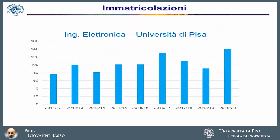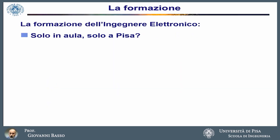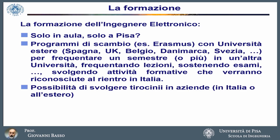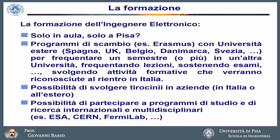For some years, the number of students enrolled in the electronic engineering course has been between 100 and 140 units — a number that allows a good quality of teaching. The training of the electronic engineer does not only happen in school and not only in Pisa. Active exchange programs such as the Erasmus program are available with foreign European and extra-European universities, allowing a student to spend a semester or even an entire academic year at another university. These activities — following lessons, taking exams, attending laboratories — will be recognized and inserted into the student's course of study upon return to Italy. There is also the possibility to carry out internships in companies in Italy and abroad, and to participate in international research and multidisciplinary programs such as those active at the European Space Agency, the European Research Center, and the Fermilab of the United States.